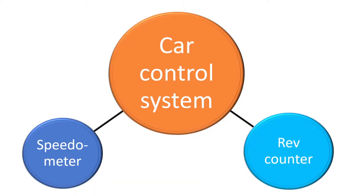One way of thinking about a computerized car is to see the car control system as some central server that controls everything, with the speedometer and rev counter as two instruments that need to obtain information from this car control system. In a typical client-server architecture for that, the instruments send requests to this car control system at ad hoc times, and in some cases two requests arrive simultaneously and the system can only service one at a time.